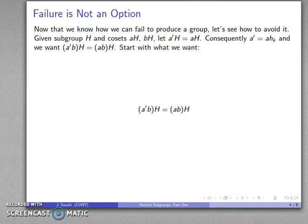So I'll start with what I want: product equals product, and we'll work our way back. So again if two cosets are equal, I know the thing that generates the coset has to be an element of the other coset, which means that this has to be ab times something.